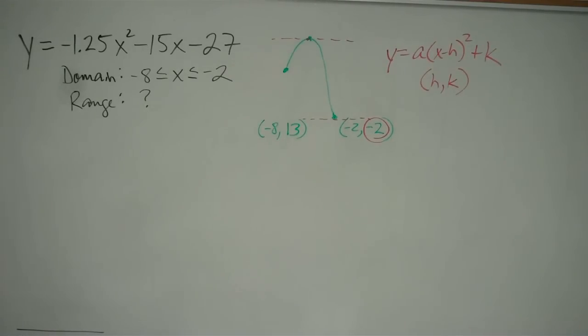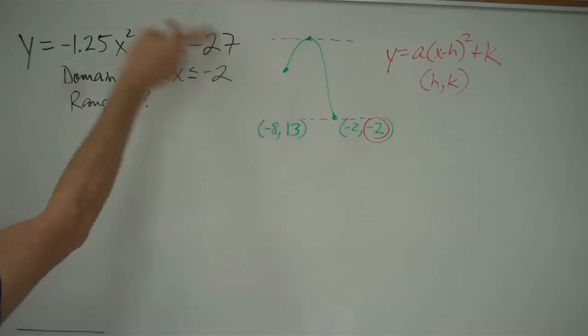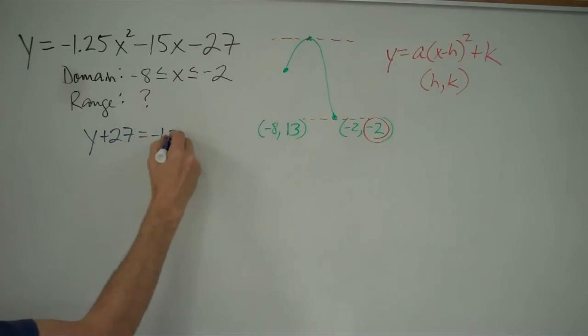Okay. So, completing the square. The first thing we've got to do is we have to get something that is a perfect square on the right side. And the way we do that is by chucking this constant term over to the other side and dividing everything by this coefficient right here. So the way we chuck the constant term over is by adding 27 to both sides. So I'm going to have y plus 27 equals negative 1.25x squared minus 15x.